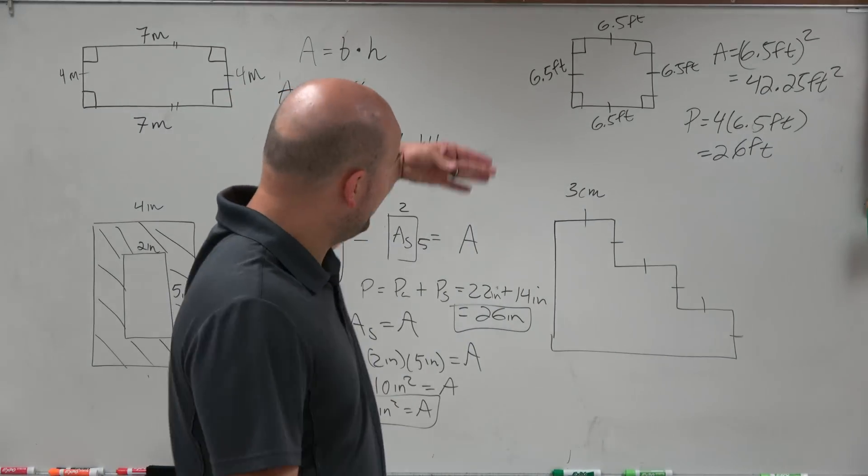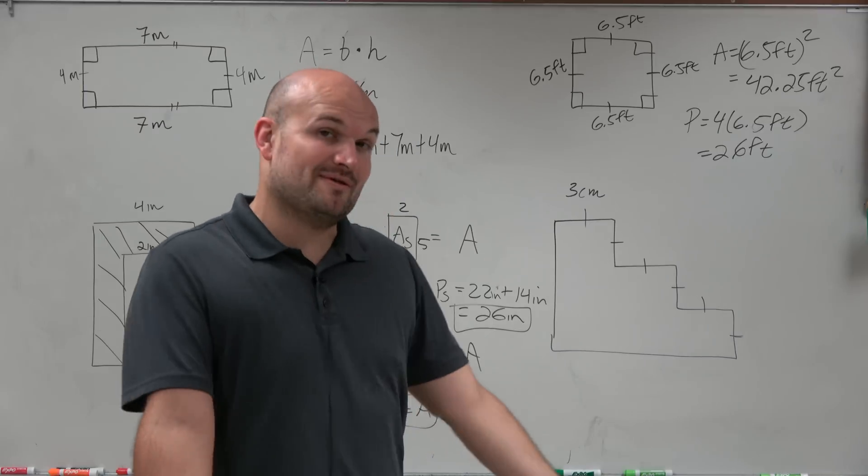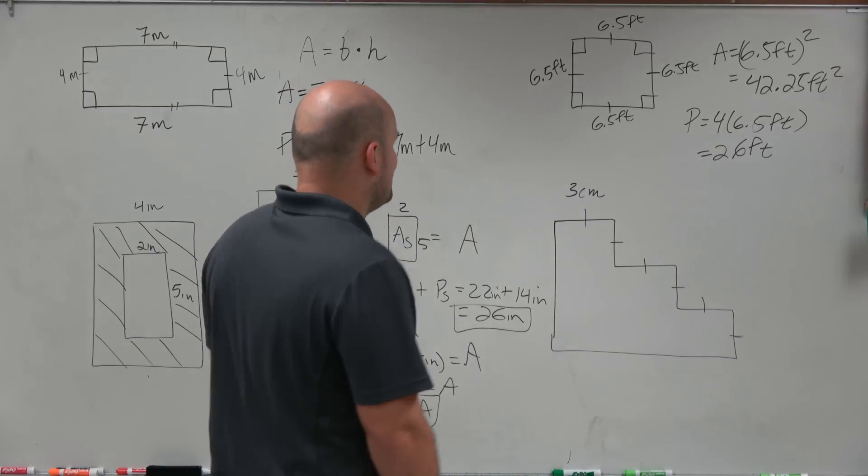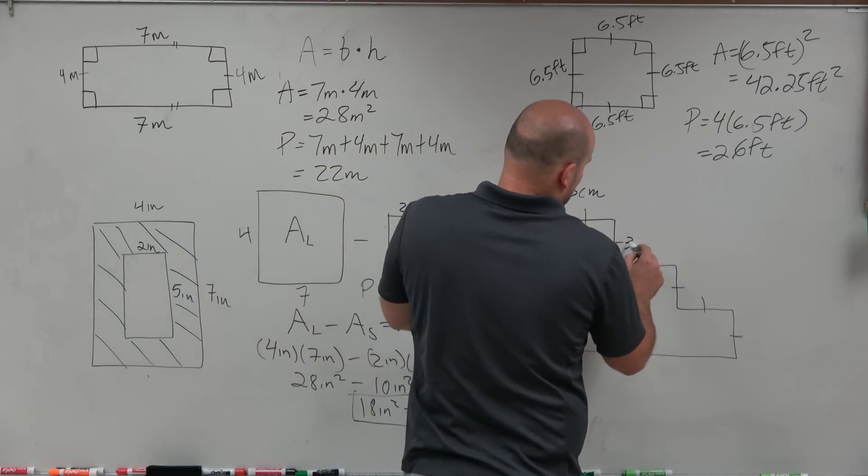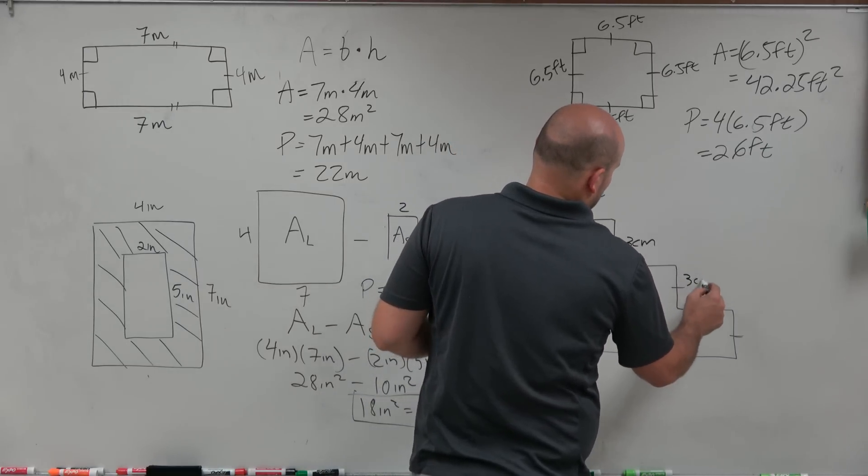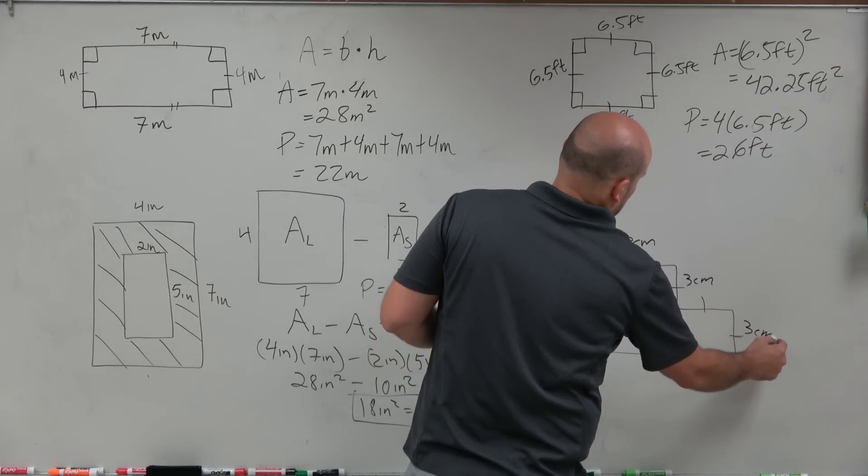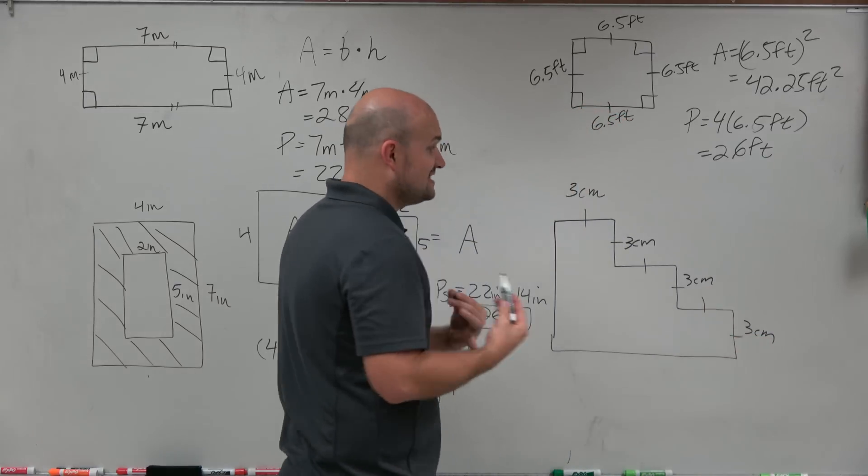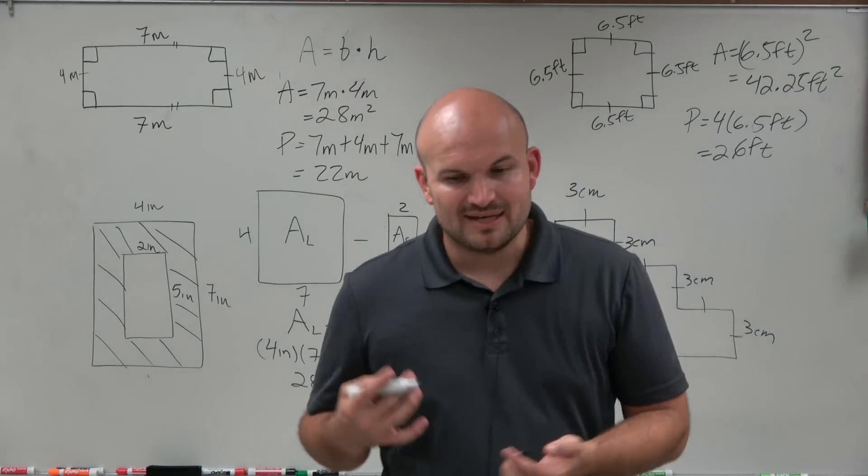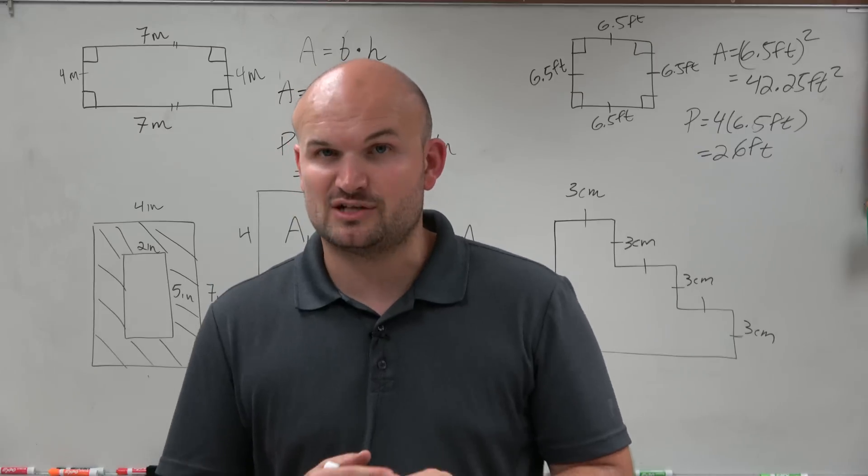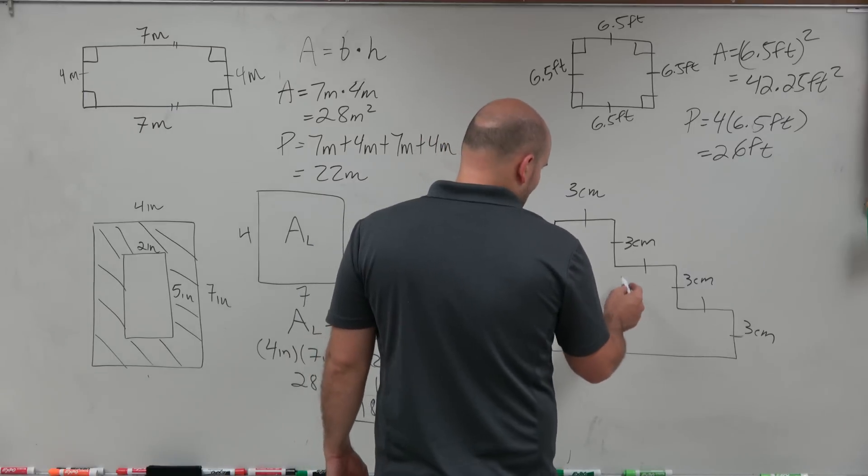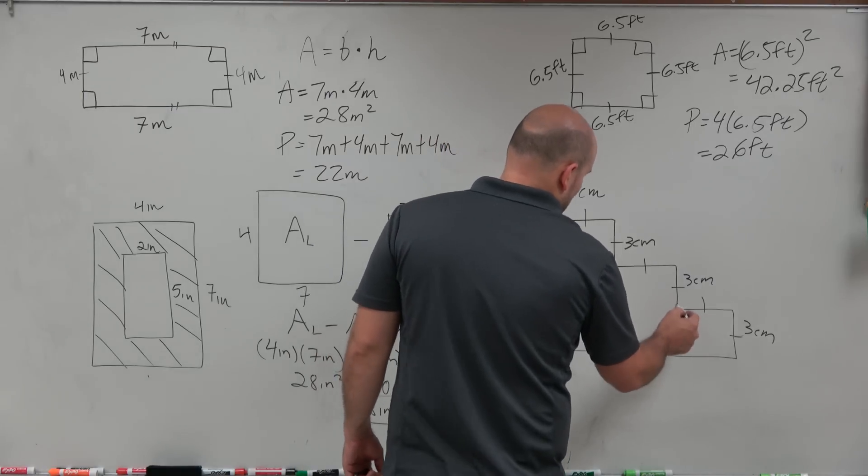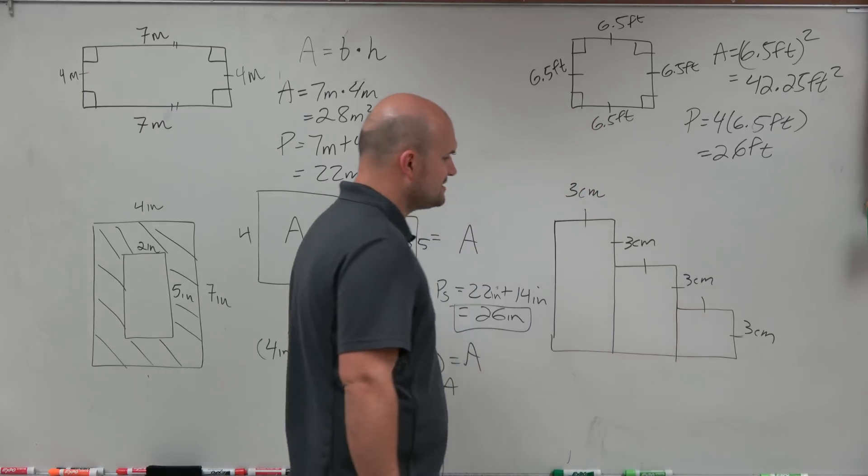Last but not least we have this figure which we don't have a formula for, but what we notice is we see that each of these tick marks are all the same. So therefore each of these sides is 3 centimeters, and each of these are 3 centimeters long. That's very important because what we can do now is if we're trying to find the area using rectangles, we want to create some rectangles.